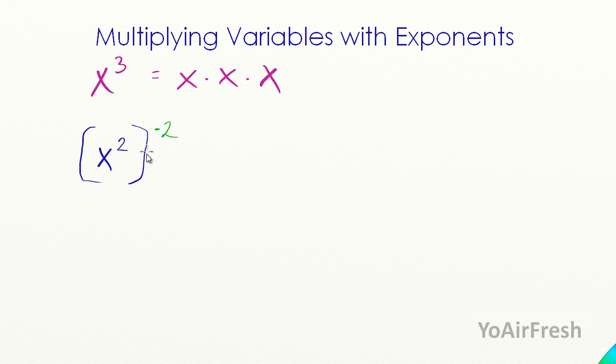let's say we have a problem here. It's x squared to the negative two power. Very simple. Just multiply these together. So we've got x to the negative four. And you might not even be getting into this in basic algebra. But if you are, that's a pretty brief and simple explanation. This can simplify if you want x to the fourth, one over x to the fourth.